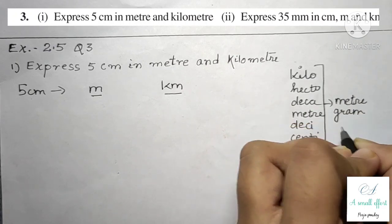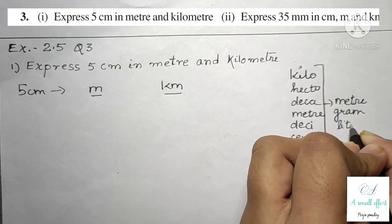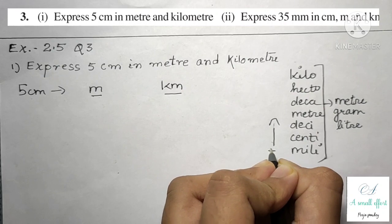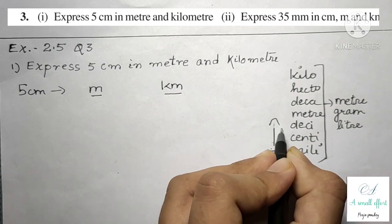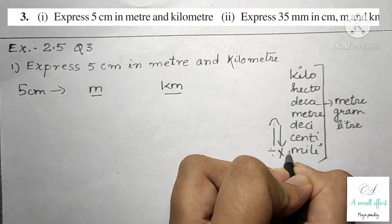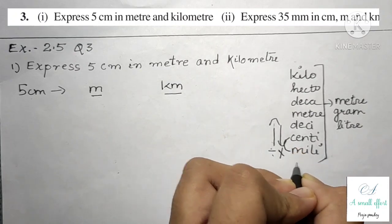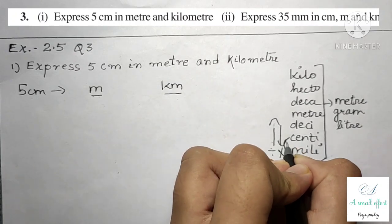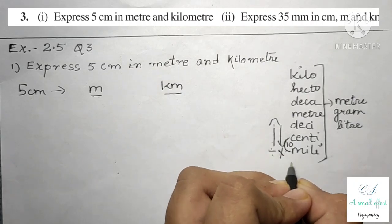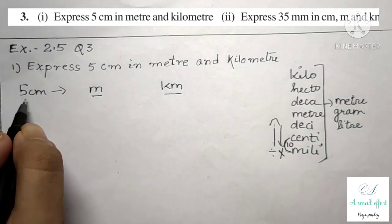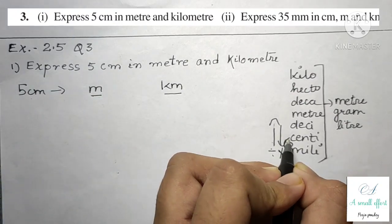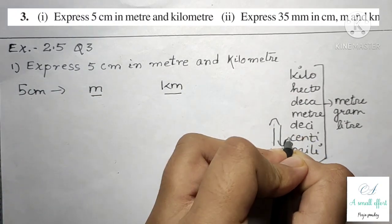This whole table works on meter, gram, and liter. As we go up we divide, and if we go down we multiply. Each step up or down is 10 — going up we divide by 10, going down we multiply by 10. So to convert 5 centimeter into meter, centimeter is here and meter is here.